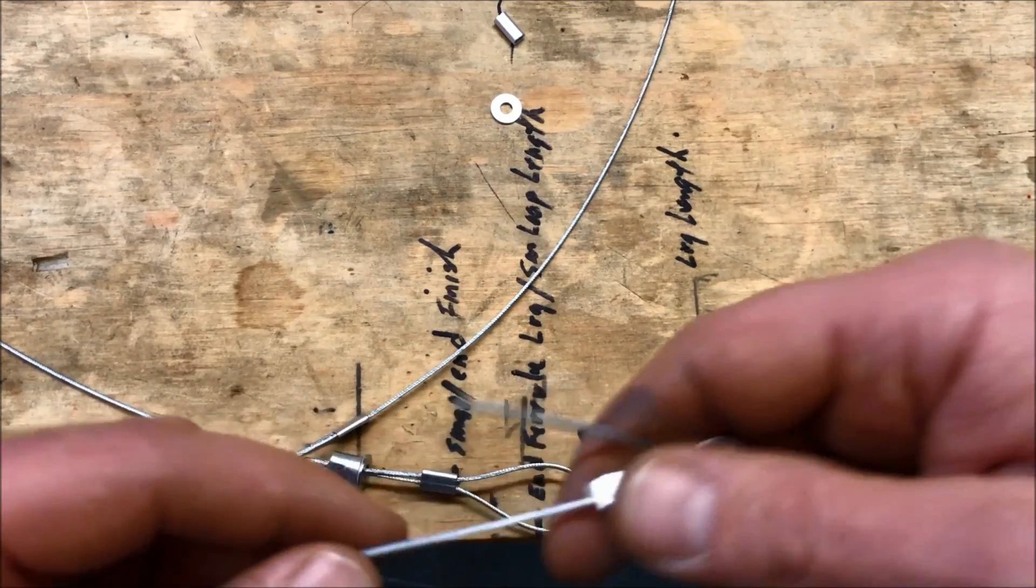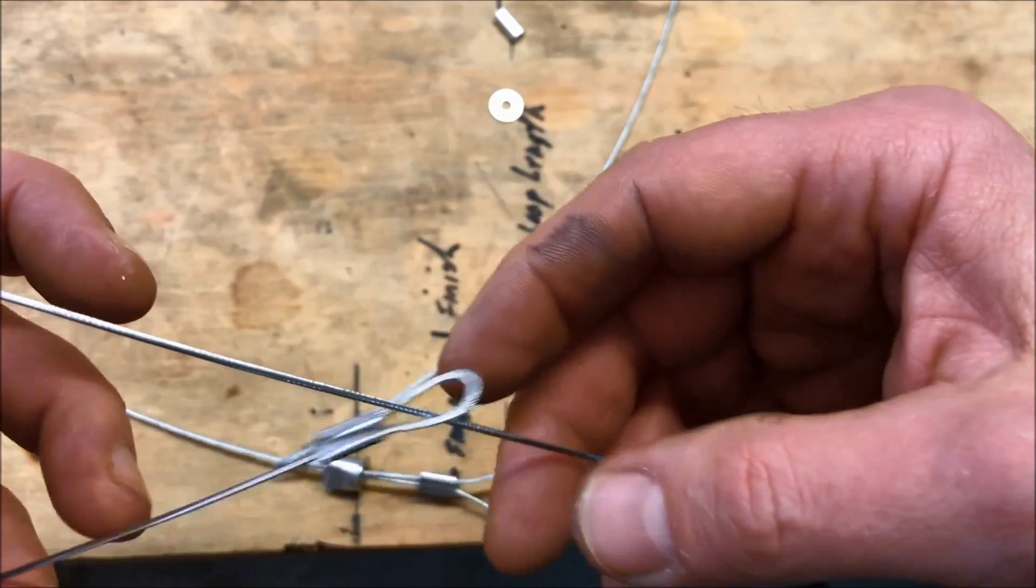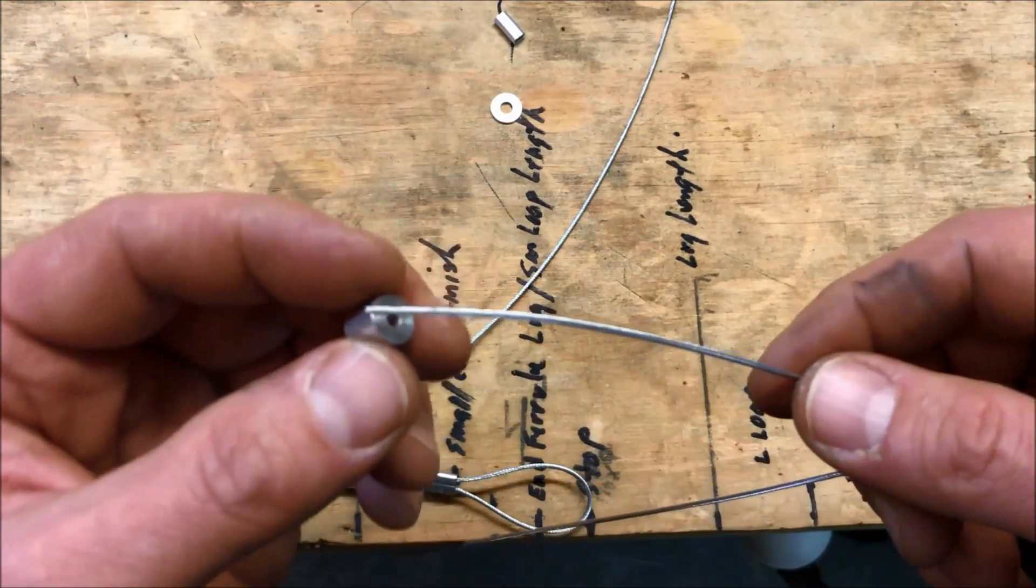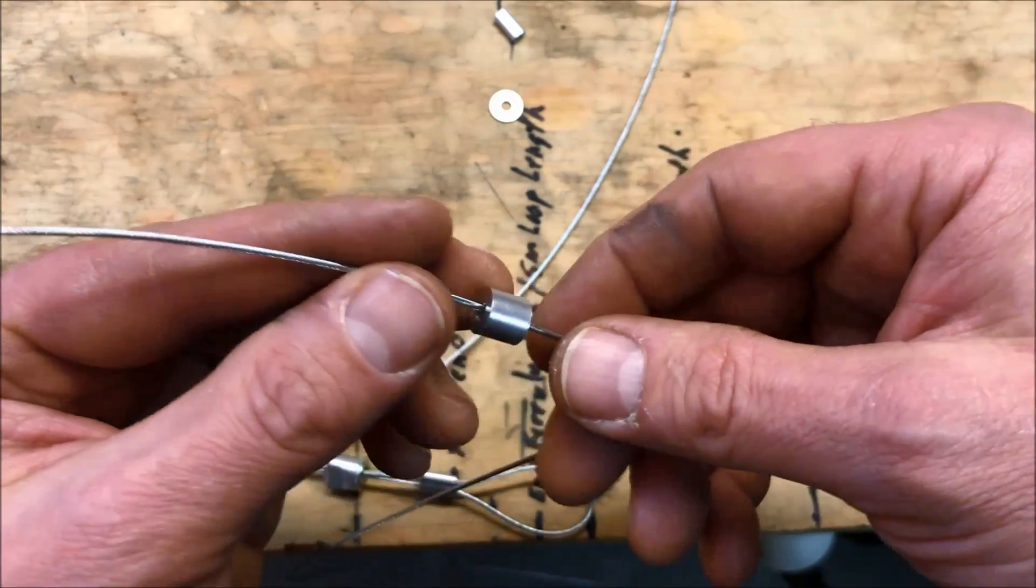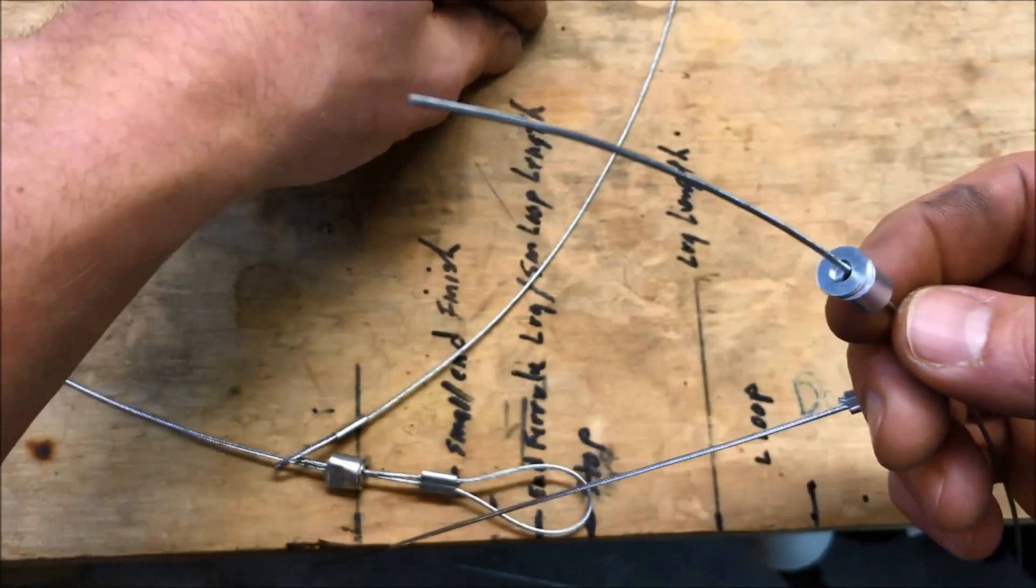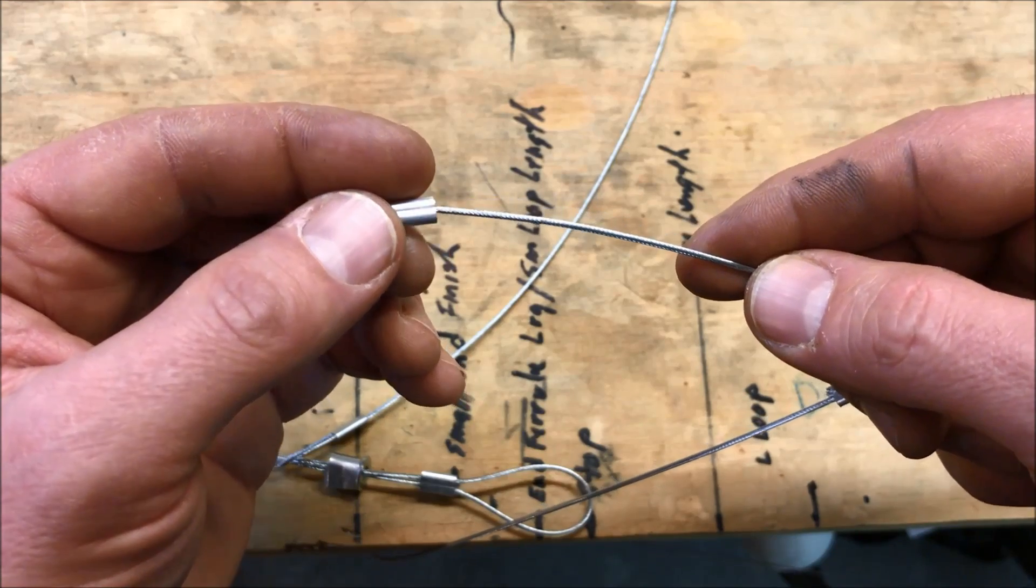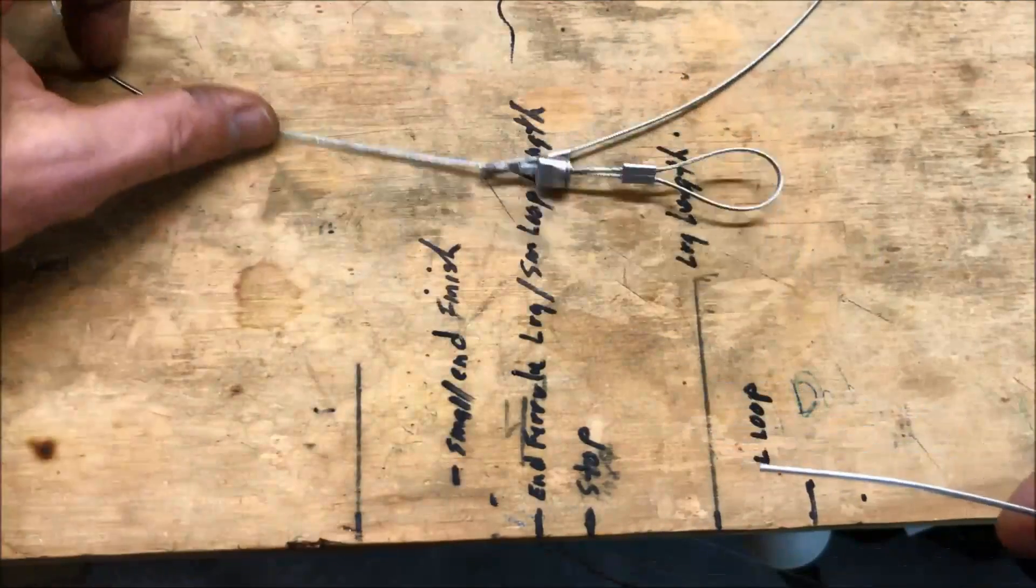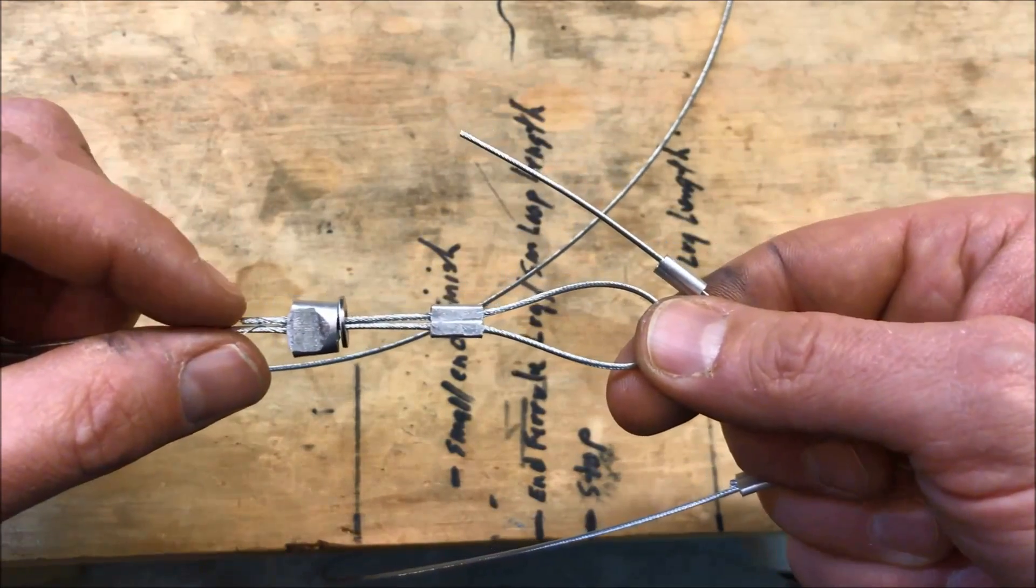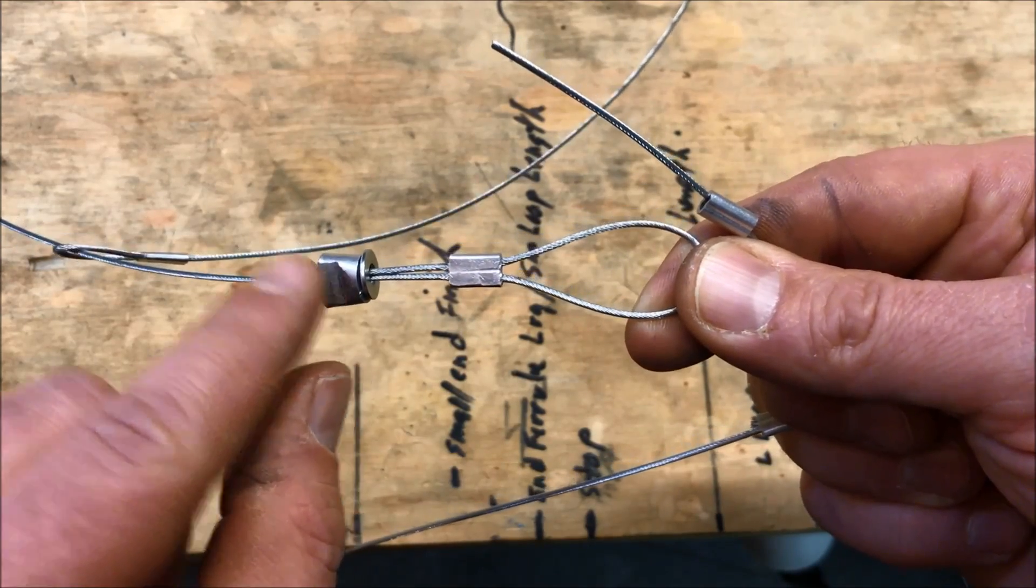So now we'll grab our tag end over here. Insert it through our small loop. So I'm going to drag it down and then now we'll put the rest of our components together. So we're going to grab our 1/16th single ferrule, our number six washer, and then we'll grab our 3/64th double ferrule. Remembering as well the tag end, you got to have enough slack to make sure it goes past the double ferrule and goes into the single ferrule.